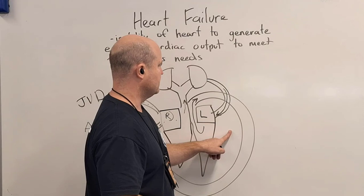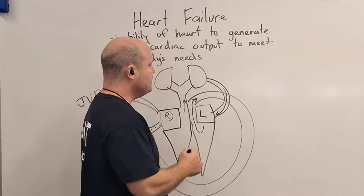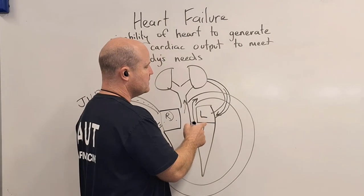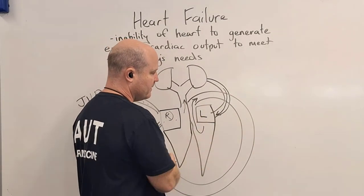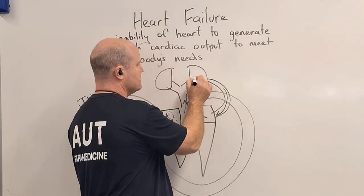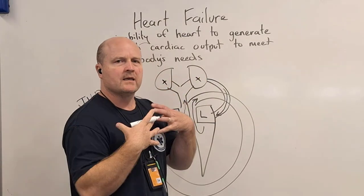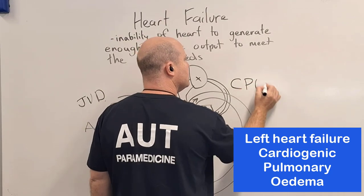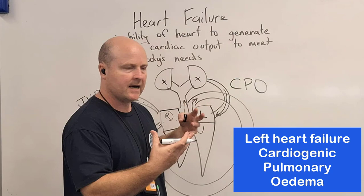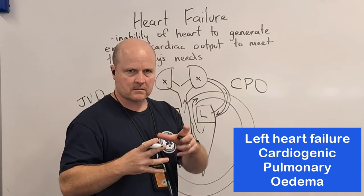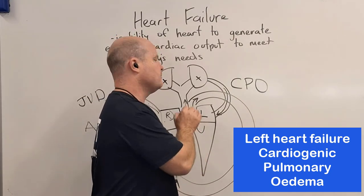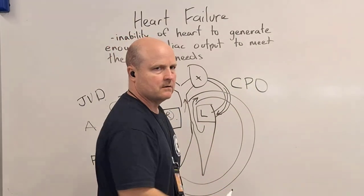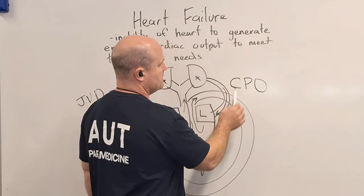On the left side, it should be taking blood from the lungs and sending it to the rest of the body. But if it's not pumping it away to the body, it's going to build up back in the lungs. With lots of pressure in the lungs, we get fluid accumulating — that's cardiogenic pulmonary edema. Cardiogenic: cardio means heart, genic means genesis or creation — a problem created by the heart. Pulmonary means lungs, edema means fluid. Cardiogenic pulmonary edema: a buildup of fluid in the lungs because of a problem in the heart.